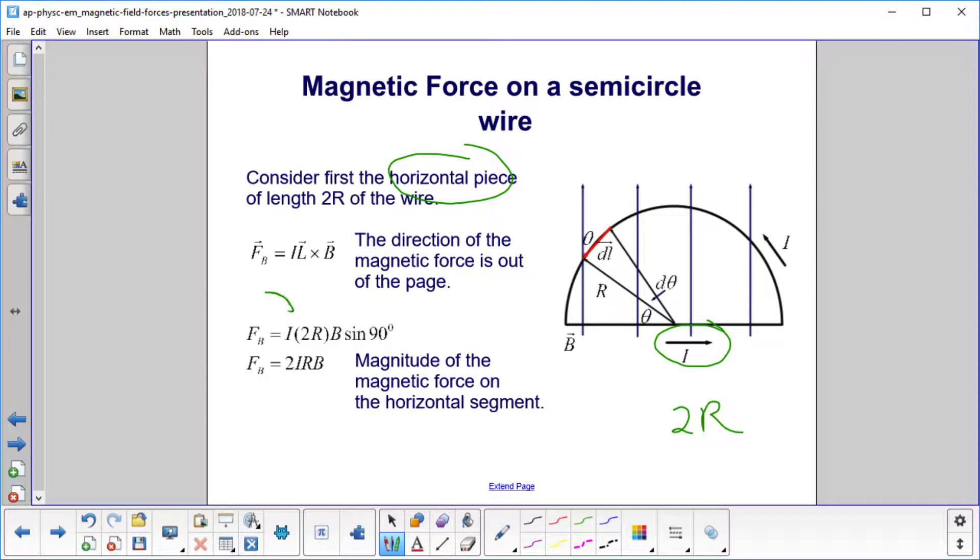Then we do the magnitudes. So that'll be the magnitude of the current times the length, which is 2R, times B, strength of magnetic field. And what's the angle between the current and the magnetic field? Well, that's 90 degrees. So you get 2IRB.